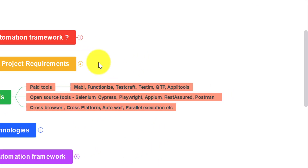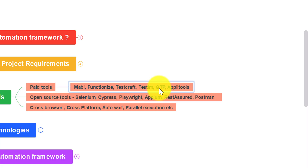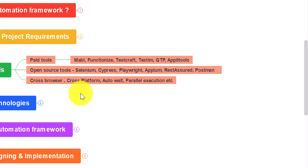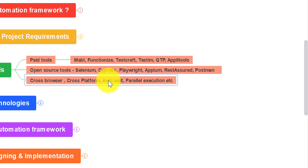There are some points to consider when selecting the right tools for your automation framework. There are paid tools and open source tools available. AI tools include Mabl, Functionize, TestCraft, and QTP. For open source, one of the best and widely used is Selenium WebDriver. Others include Cypress, Playwright, and for API testing: REST Assured and Postman. While selecting the right tool, you need to understand whether it supports cross-browser testing, cross-platform testing, and parallel execution.